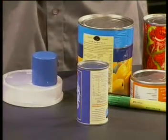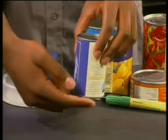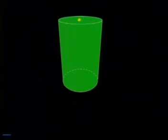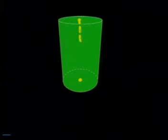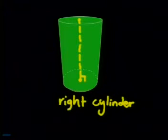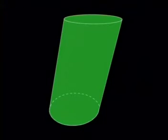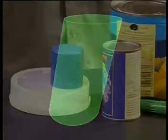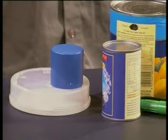The bases are also parallel to each other. There are two kinds of cylinders: right cylinders and oblique cylinders. If you drop a straight line through the middle of the cylinder — from the middle of one base to the middle of the other base — and it meets the bases at right angles, then the cylinder is a right cylinder. Otherwise, it is an oblique cylinder. We're only going to be working with right cylinders in this lesson.